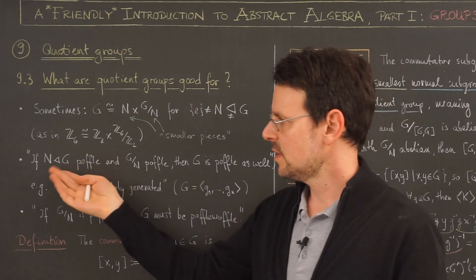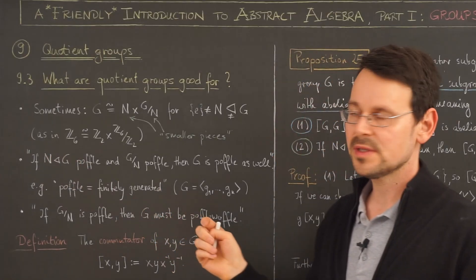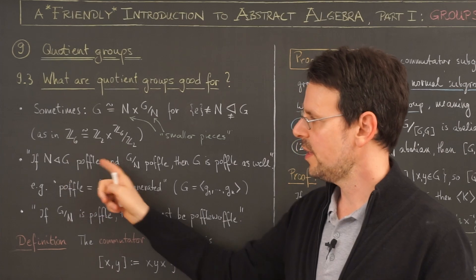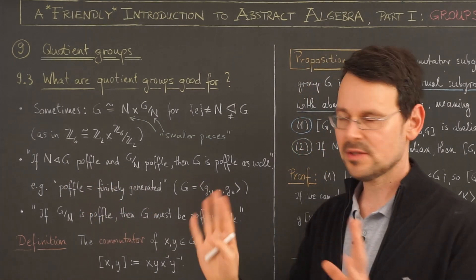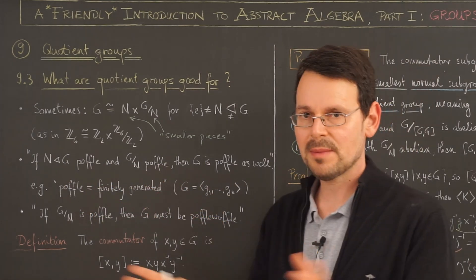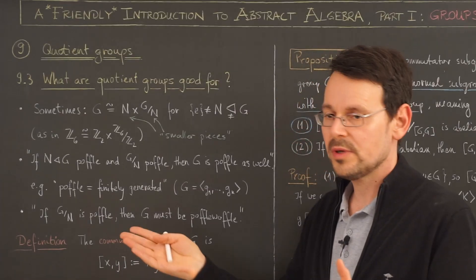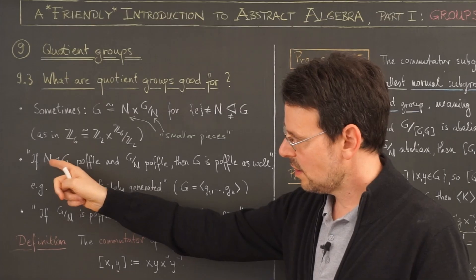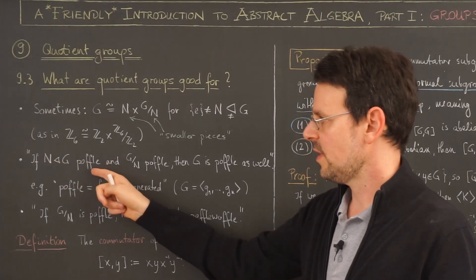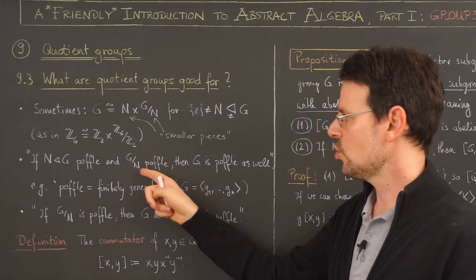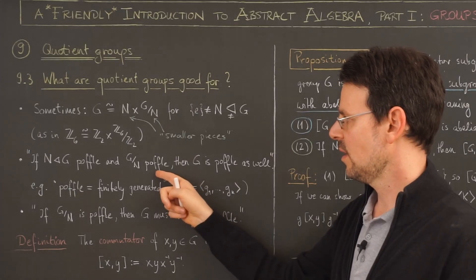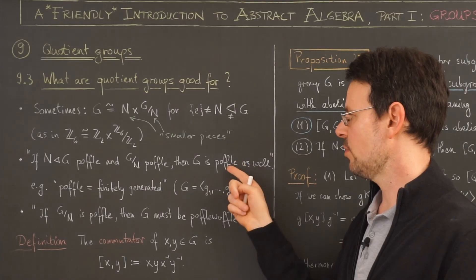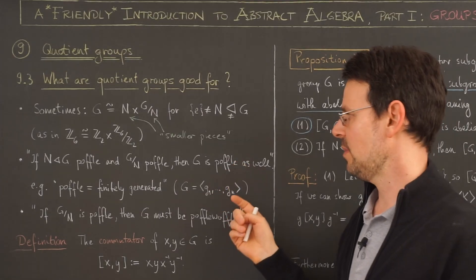As a second reason, there are some propositions of the following sort. If I have a normal subgroup that satisfies some property POFL — this just stands for some property of the normal subgroup — and if the quotient also satisfies this property, then I can infer that G itself has the property POFL, whatever that may mean.